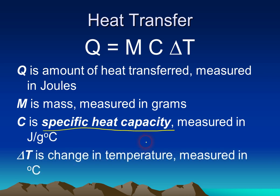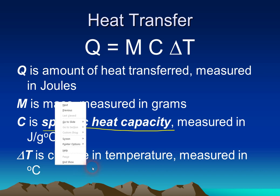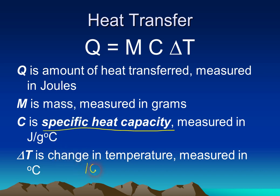Delta T is the change in temperature of an object, and that's measured in degrees Celsius. For example, if we go from 10 degrees Celsius to 20 degrees Celsius, that is a delta T of 10 degrees — the temperature is changing by 10.